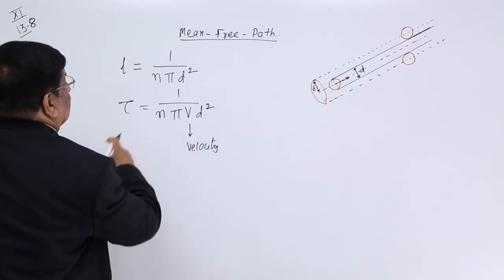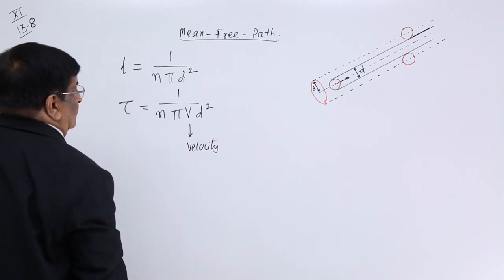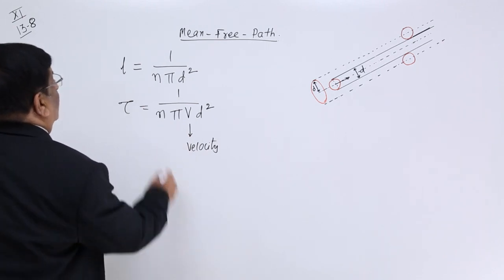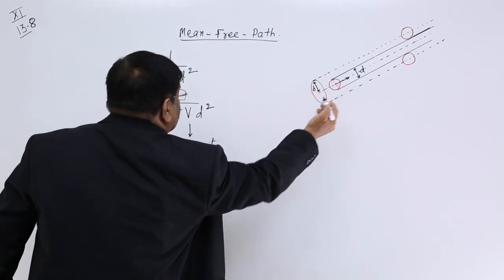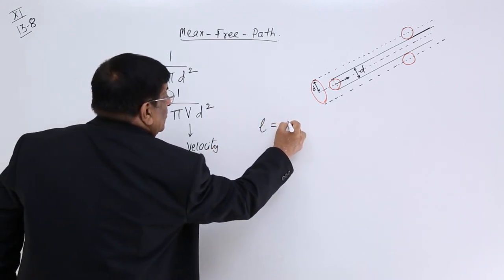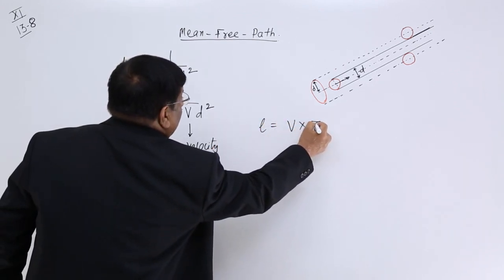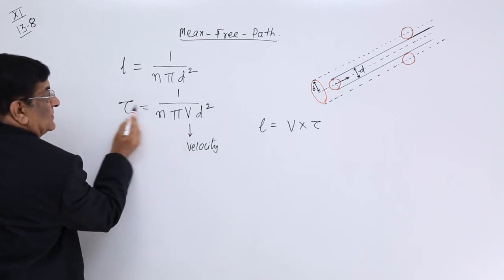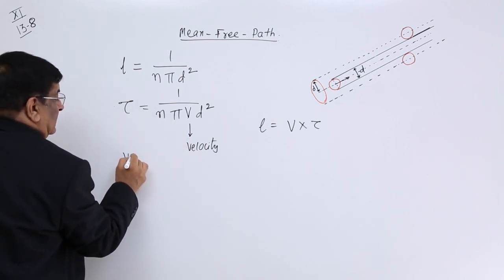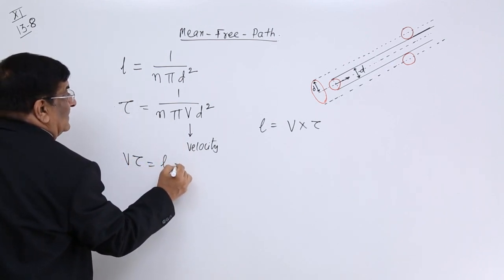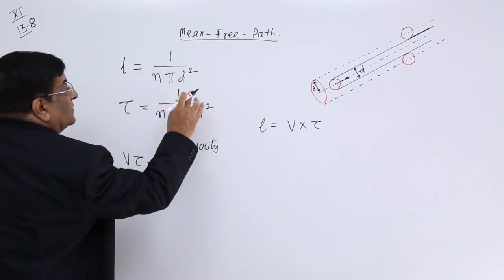So this is time period between two collisions and what is the length between two collisions? Length is equal to velocity into time period, so if we take the velocity here, then v times t, what does it give? Length.